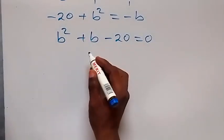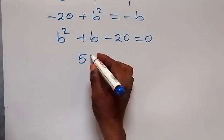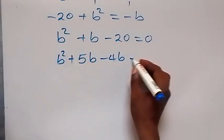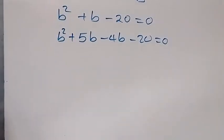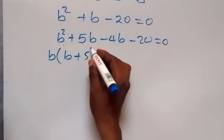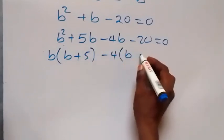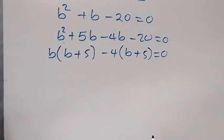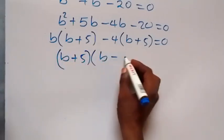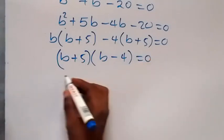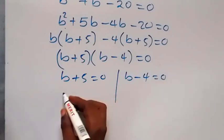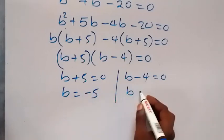Factoring b squared plus b minus 20 equals zero: factors of minus 20 that add to plus 1 are plus 5 and minus 4. So we get (b plus 5)(b minus 4) equals zero. Therefore b plus 5 equals zero or b minus 4 equals zero, giving b equals minus 5 or b equals 4.